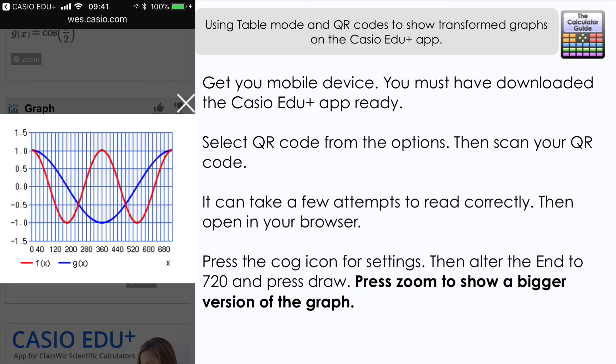So we can see there that the transformation that's happened is that it's been a stretch in the x-axis by a scale factor of 2. The wavelength is now twice as long for the transformed graph.